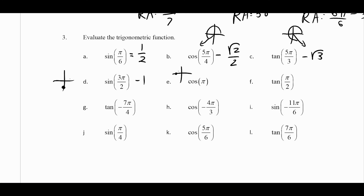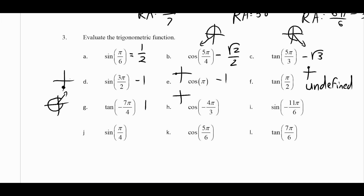Cosine of π is 180 degrees — the x-value there is negative 1. Tangent of π over 2 is 90 degrees — thinking of tangent as slope from the origin, that slope is undefined. For 3π over 4, going in the opposite direction gives a reference angle of 45 degrees, so tangent is 1. Cosine of 4π over 3 has a reference angle of 60 degrees and is negative, so it's negative one half. Sine of 7π over 6 is the same situation as sine of 30 degrees — one half. Sine of π over 4 is 45 degrees, which is root 2 over 2.